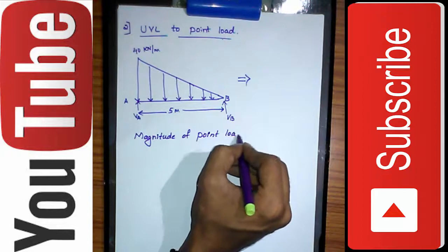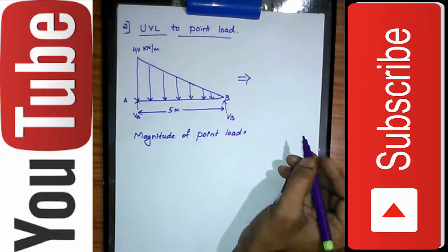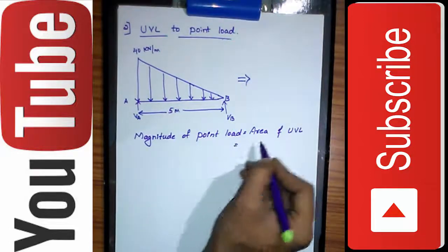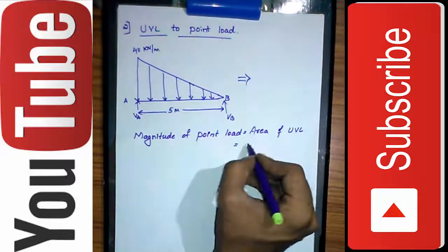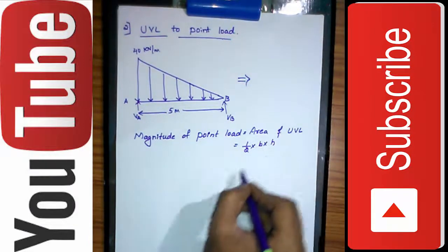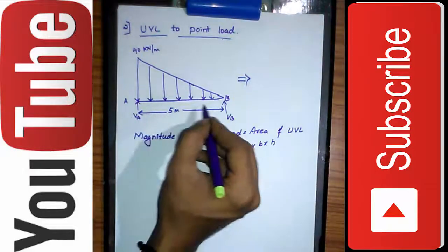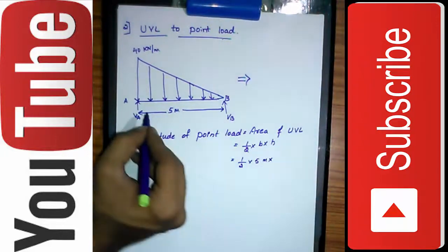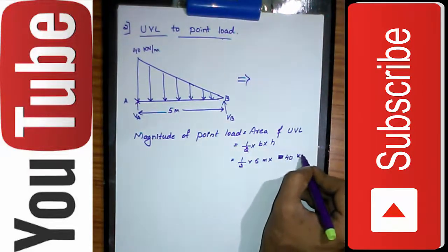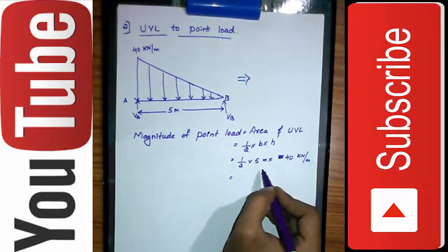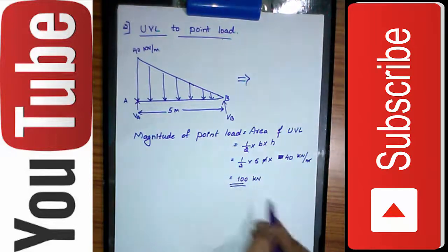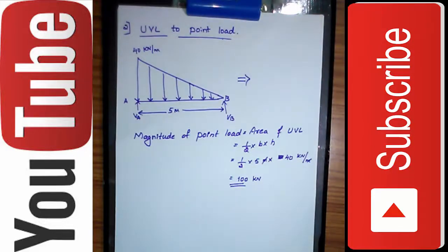To find the magnitude of the point load, we calculate the area of the UVL. The UVL is in the shape of a triangle, so the area equals half multiplied by base multiplied by height. The base is 5 meters and the height is 40 kN per meter. So: half × 5 × 40 = 100. The meter units cancel, giving a magnitude of 100 kN.